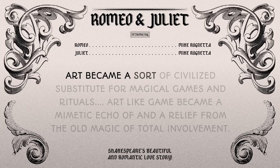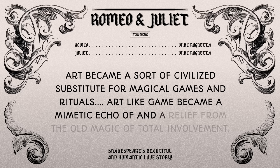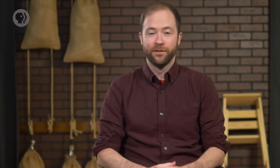As media theorist Marshall McLuhan puts it, in this view art became a sort of civilized substitute for magical games and rituals — 'art, like game, became a mimetic echo of and a relief from the old magic of total involvement.' For an example of the sometimes questionable evidence that the Cambridge Ritualists drew on to support their idea that ritual evolved into theater, let's look at the Greek historian Herodotus writing in the 5th century BCE, describing a ceremony he witnessed in Egypt.